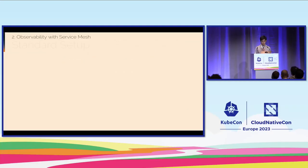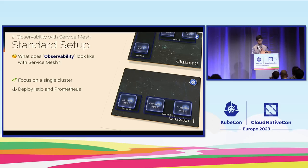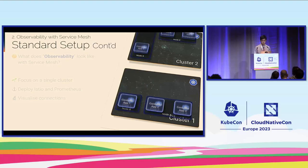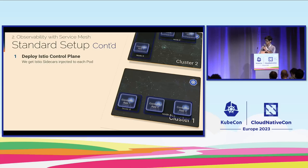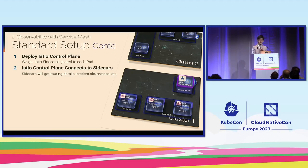So, observability with service mesh. The standard setup is just one cluster with service mesh. We'll focus on a single cluster first, deploying Istio and Prometheus, and visualize connections. Looking at cluster one, you can see there are only three application containers. With Istio control plane, the Istio sidecar is injected. Istio control plane then connects to the sidecars, and sidecars get routing details, credentials, and metrics.